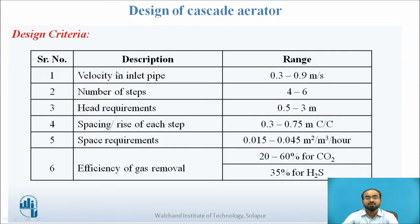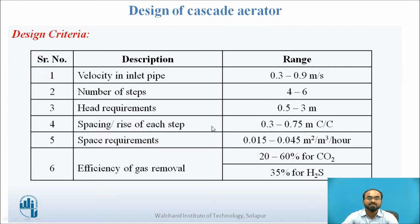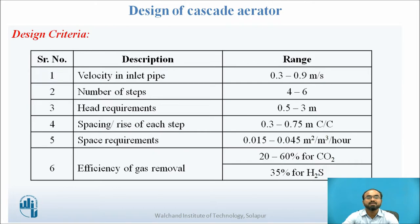What are the design criteria? The velocity in the inlet pipe is generally considered to be 0.3 to 0.9 meters per second. The number of steps in the aerator should be between 4 to 6. The head requirement is generally between 0.5 to 3 meters, so the maximum height of the aerator is always kept at about 3 meters. The spacing or rise of each step is generally taken between 0.3 to 0.7 meters center to center. The space requirement is generally between 0.015 to 0.045 meters squared per meter cube per hour. The target efficiency of gas removal is kept between 20 to 60 percent for CO2 and 35 percent for H2S gas.